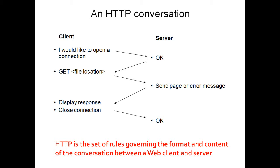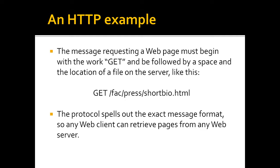An HTTP conversation is shown here. The client requests a connection and the server responds to it. Then it asks for information such as a GET request, the server sends the page or an error message, the response is displayed, and the connection is closed. HTTP sets the rules for conversation between web clients and servers. An example shows a client message requesting a web page. The web client can easily retrieve pages from any web server as it uses the exact message format.